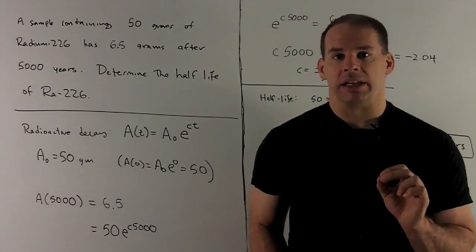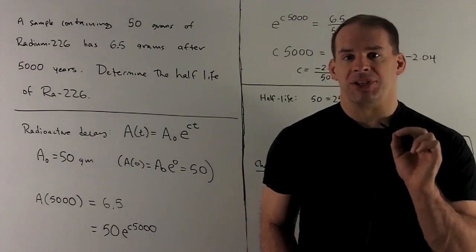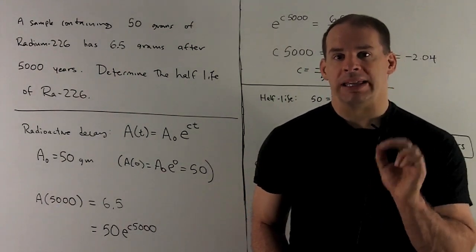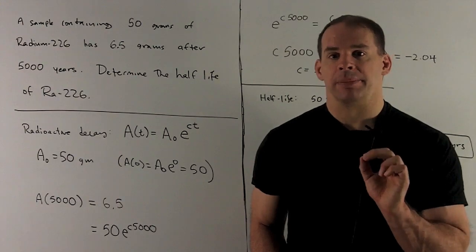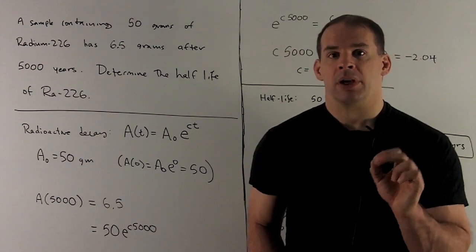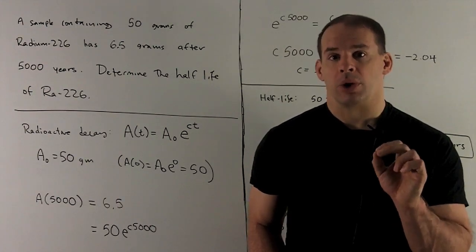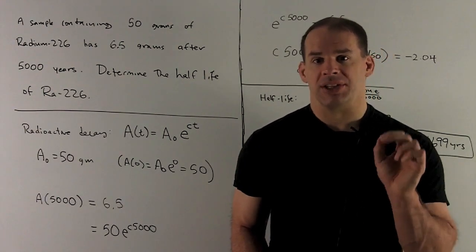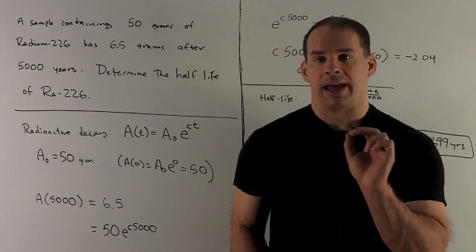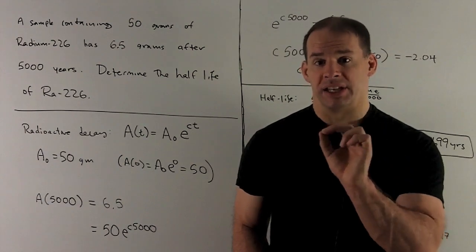A of t equals A-zero times e to the c times t. Here we're going to need to solve for the unknowns A-zero and c.